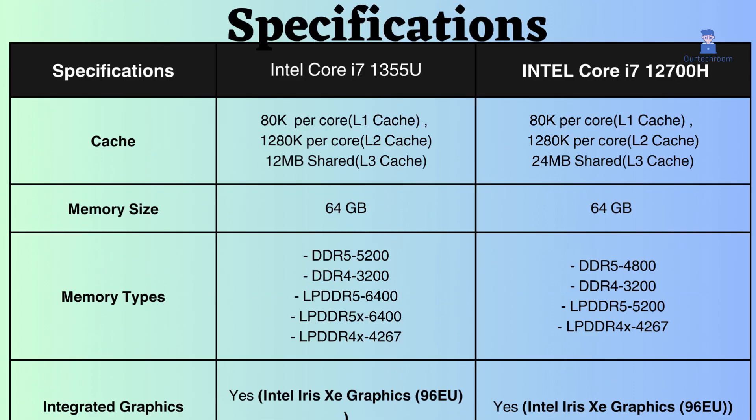The L1 and L2 cache of both processors are the same, but the L3 cache of the Intel Core i7-12700H is greater than that of the Intel Core i7-1355U. L3 cache sits between the L2 cache and main memory, helping to store frequently accessed data and instructions, which improves the overall performance of the computer.